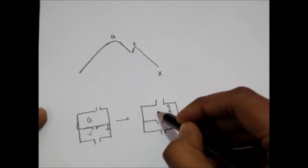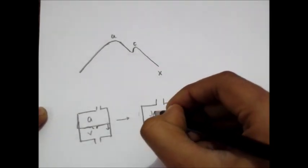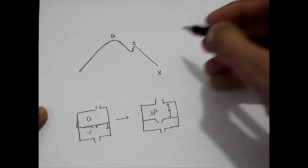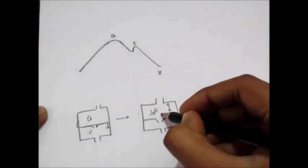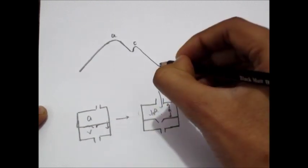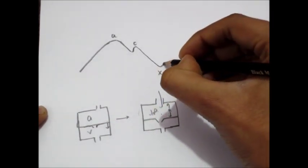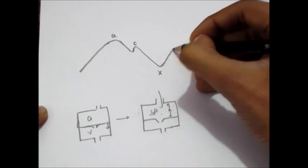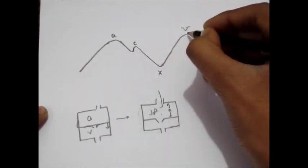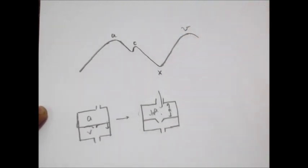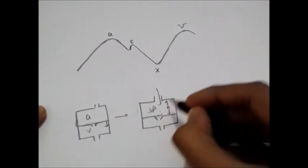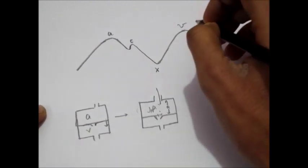The increased volume of the atrium leads to decreased pressure, and that decreased pressure leads to formation of the X wave. Then, due to this decreased pressure, blood starts coming into the atrium again, increasing the pressure and leading to formation of the V wave. The tricuspid valve remains closed throughout until the X wave.